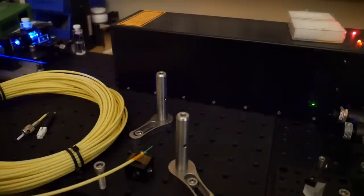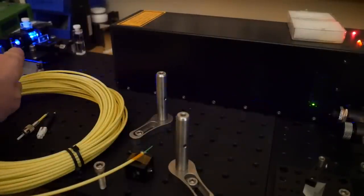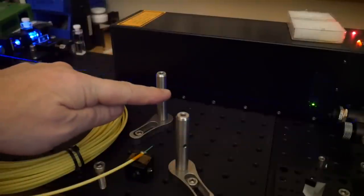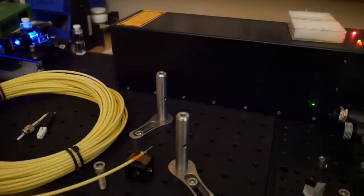So I have the dye laser set up here lasing Coumarin 1 and the beam is being directed by a mirror all the way across the end of the bench there to my sensor. Let's take a look at the oscilloscope.